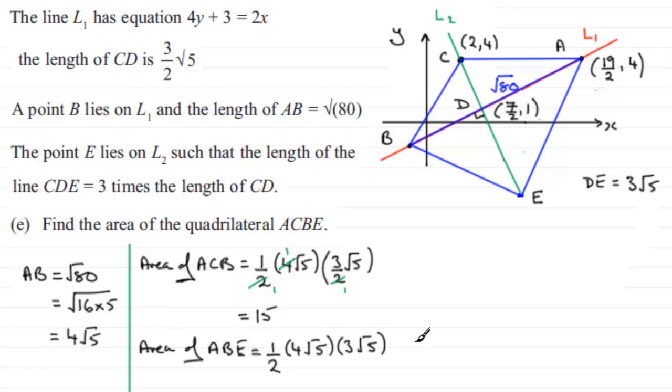Again, we can clean this up. I can see that the 2 here goes into the 4 twice, and we've got 2 times 3, which is 6, and root 5 times root 5, which is 5. So 6 times 5 is 30. So I've got an area here equaling 30.